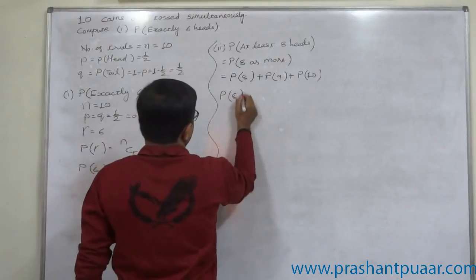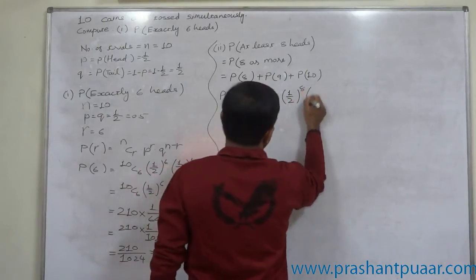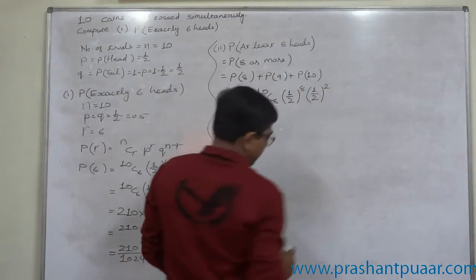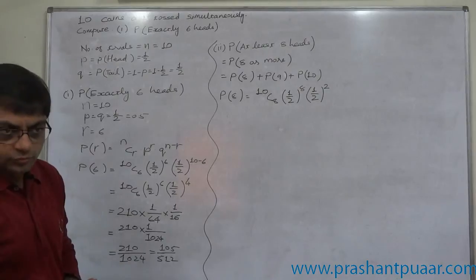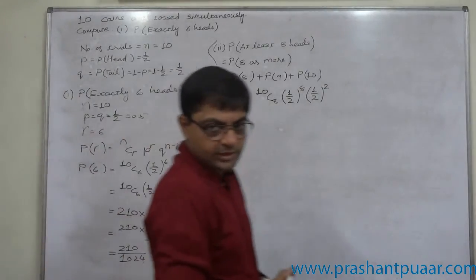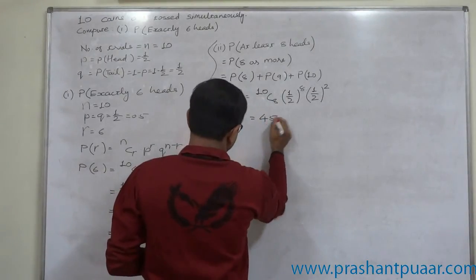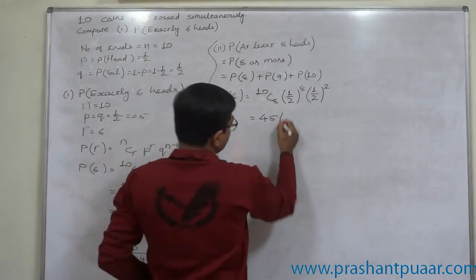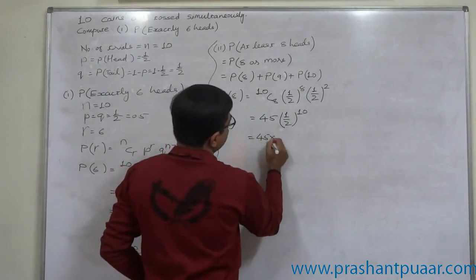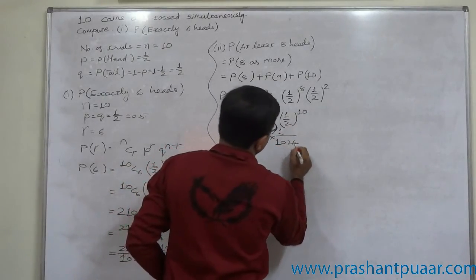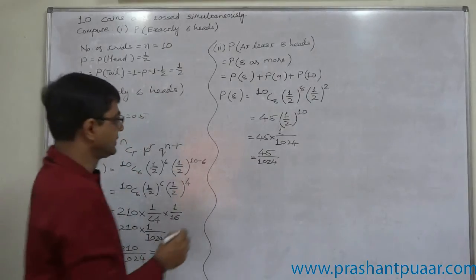P(8) = 10C8 × (1/2)^8 × (1/2)^2. Since 10C8 = 10C2 = (10 × 9)/2 = 45, and combining the powers gives (1/2)^10 = 1/1024, we get P(8) = 45/1024.